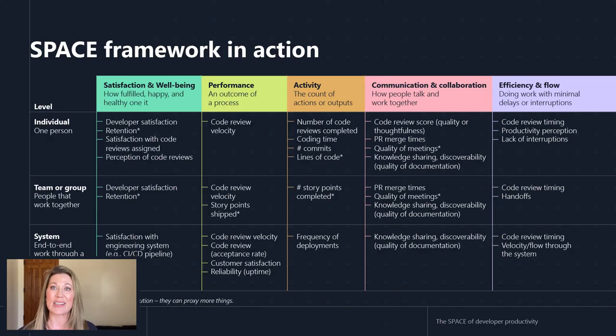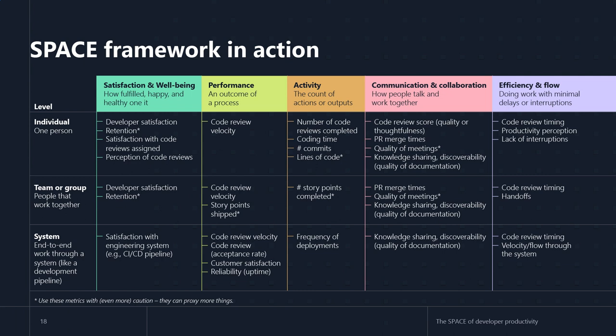Here is an image — a table showing different types of metrics that can fit into each of the SPACE dimensions. We've also shown that each of the metrics can be categorized as either individual level metrics, team or group level metrics, or system level metrics — things that fit end to end through a system. Satisfaction with an engineering system would be an example of a satisfaction or well-being metric for an entire system. Keep in mind you don't need to account for every single dimension across every single level. We include this so you can see it's possible to hit every dimension.